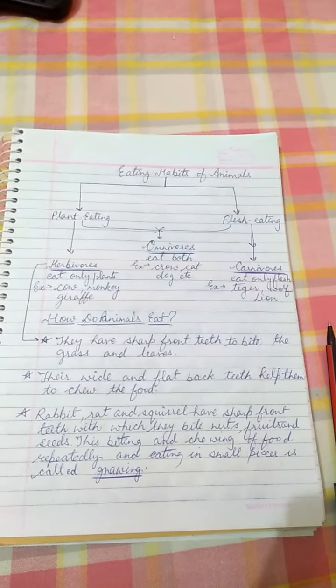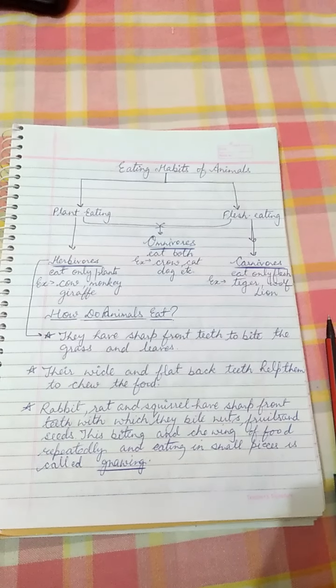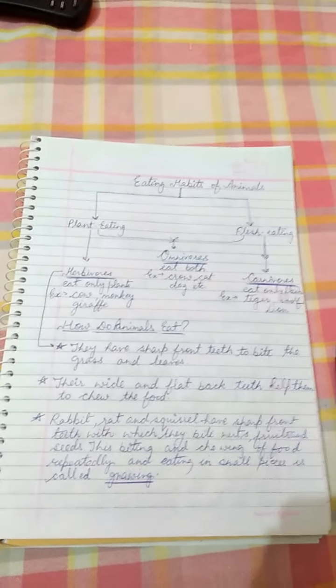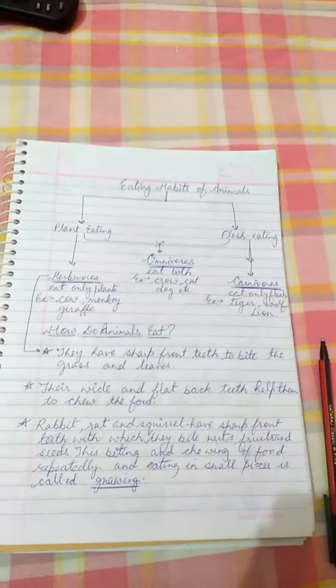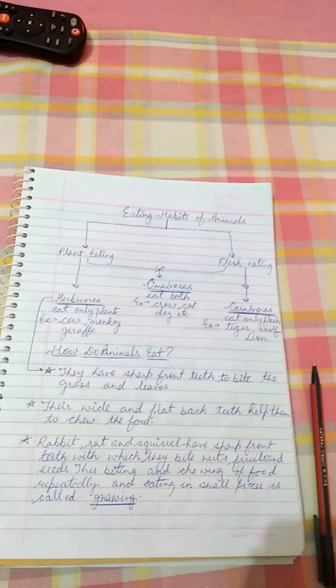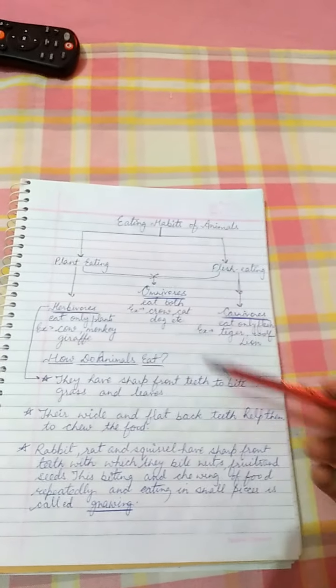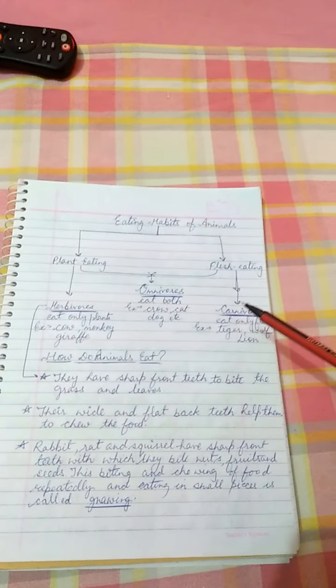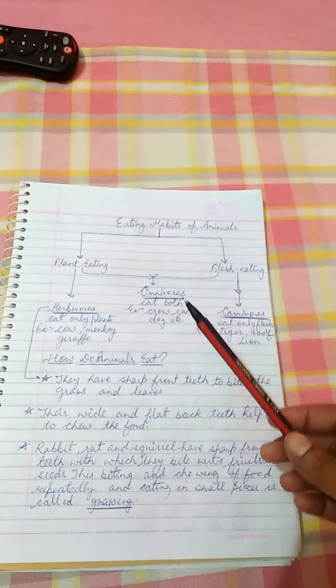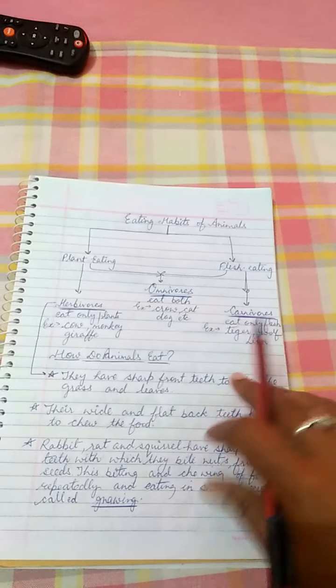Good morning everyone, let's start our new topic today: eating habits of animals. Children, you know animals need food to live, grow, and stay healthy. Food also provides energy to them. Animals eat either plants or other animals. Based on their eating habits, we can broadly classify animals as herbivorous, carnivorous, and omnivorous.